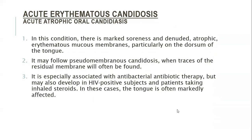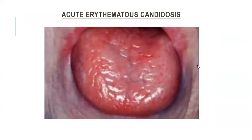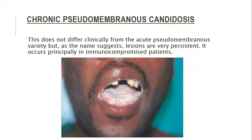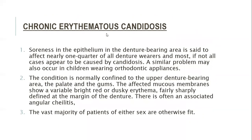In all cases the tongue is markedly affected — you can see loss of filiform papillae and a totally raw, beefy tongue. Then chronic pseudomembranous candidiasis does not differ clinically from the acute pseudomembranous variety, but as the name suggests the lesions are very persistent and occur mainly in immunocompromised patients.